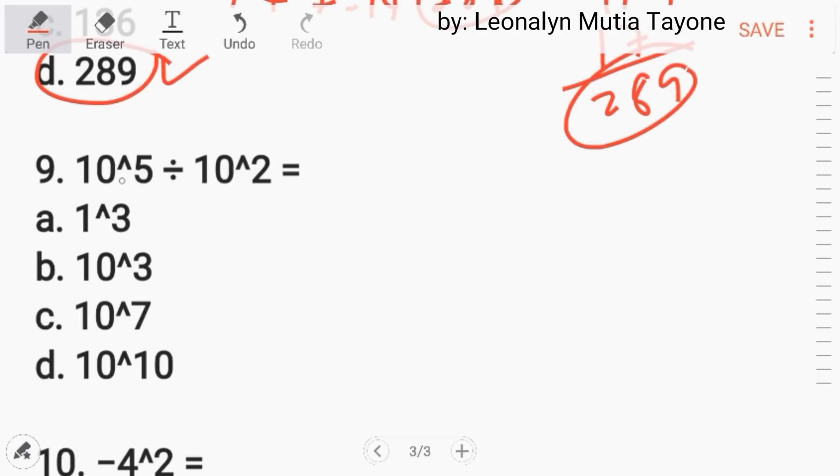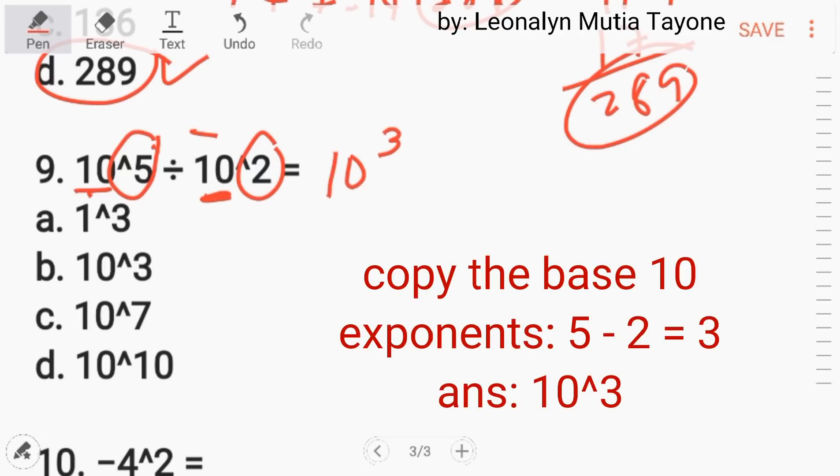Number 9. 10 to the 5th power divided by 10 to the 2nd power. Pariho ang base, so doon tayo sa law of exponent. Pariho ang base, nag-divide tayo. Ang gagawin lang natin ay yung exponent, 5 minus 2, and that is 3. So kopyahin si base na 10. So ang answer dito ay 10 to the 3rd power, letter B.